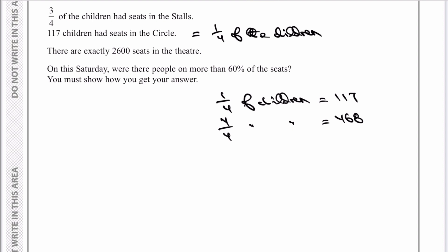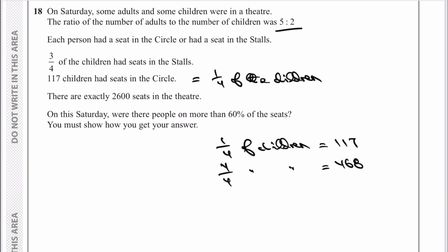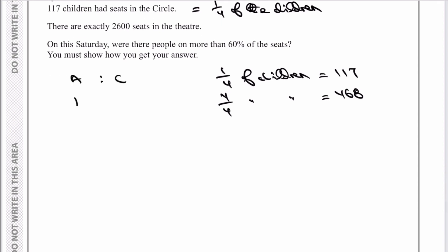The ratio of adults to children was 5 to 2. So adults to children is 5:2. There aren't two children in the theatre, we've just worked out there's actually 468. That's multiplying by 234, so if I do the same with adults, 5 × 234 = 1170 adults. Therefore the total people in the theatre is 1170 + 468 = 1638 people altogether.